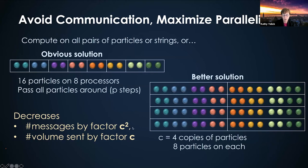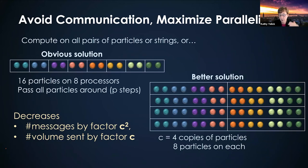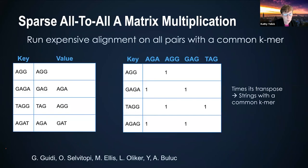The other solution divides the processors into groups, each responsible for a certain subset of the interactions. Once those computations are done, there's a reduction at the end that gives the final answer — all interactions across all particles. It's a replicate, compute, and then reduce algorithm. In genomics, the generalized version of this involves: given a set of strings or reads from a sequencer, I want to overlap them and run an alignment algorithm. The alignment algorithm itself is O(n^2) worst case in the length of those strings. You don't want to align everything to everything — you only want to align things that have at least one common k-mer.